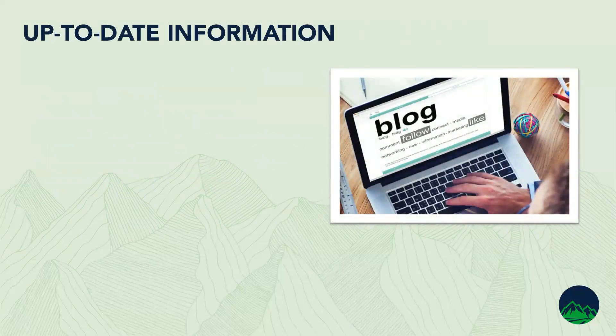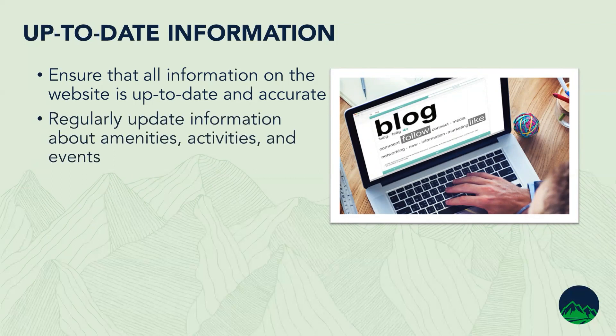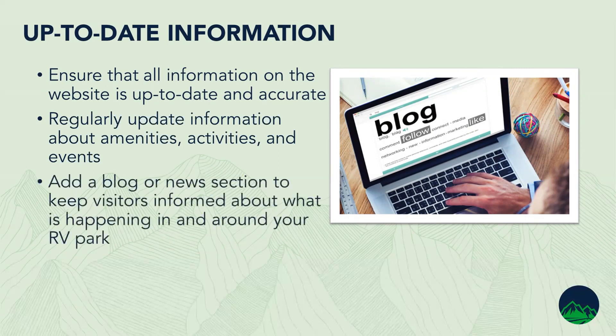Up to date information — anything online you want to make sure is being updated and accurate. If you change your phone number or anything else, change it on the site and also make sure that information is updated on business listings that are not on your website. Be regular about what's going on with your activities, amenities, and the events around. People are going to be interested in knowing what's available not only on your park but maybe in the area. You can use your blog to do that, and share any kind of news — whether it's in your park or around your park.